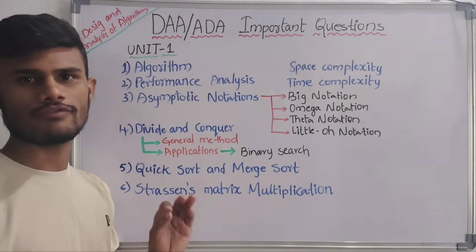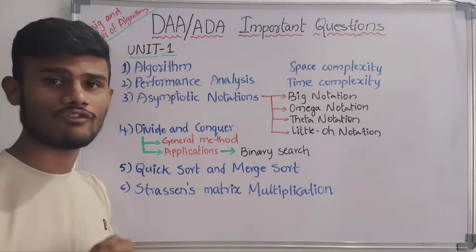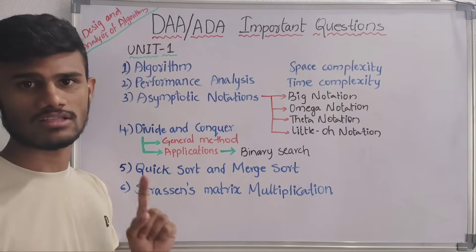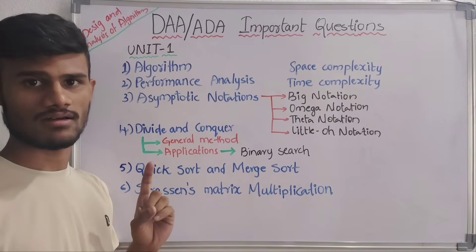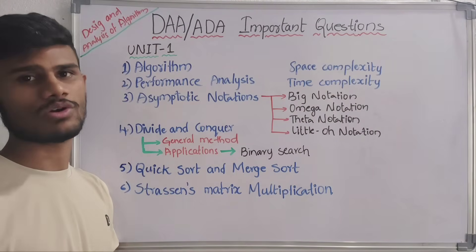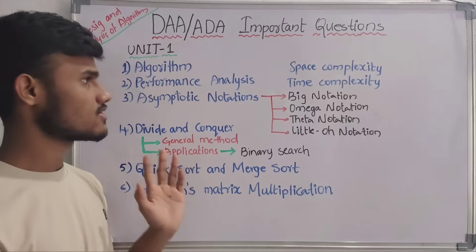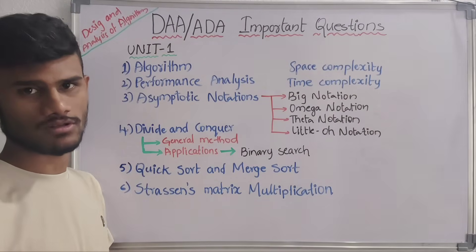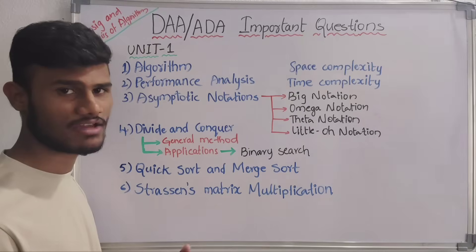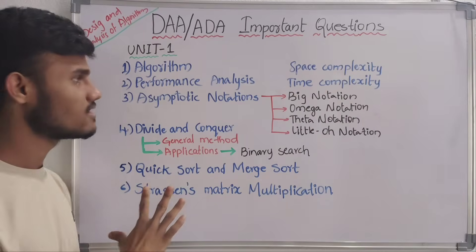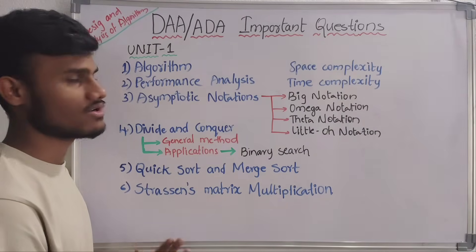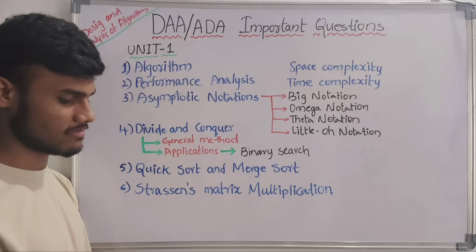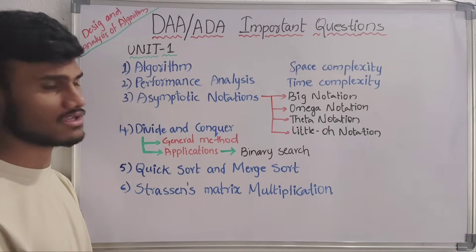Now coming to our first unit. This first unit is completely of basics of algorithm — algorithm definition, algorithm introduction. In algorithm introduction, we have 6 types of topics. In these 6 topics, we have some important topics.